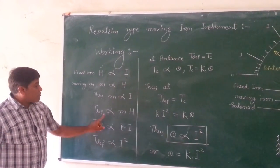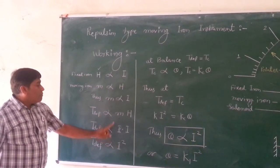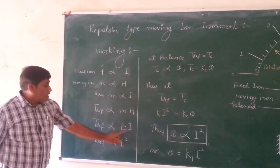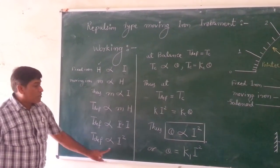And the torque, deflecting torque is proportional to M into H. Because both are proportional to the current, that's why deflecting torque is proportional to the I square.